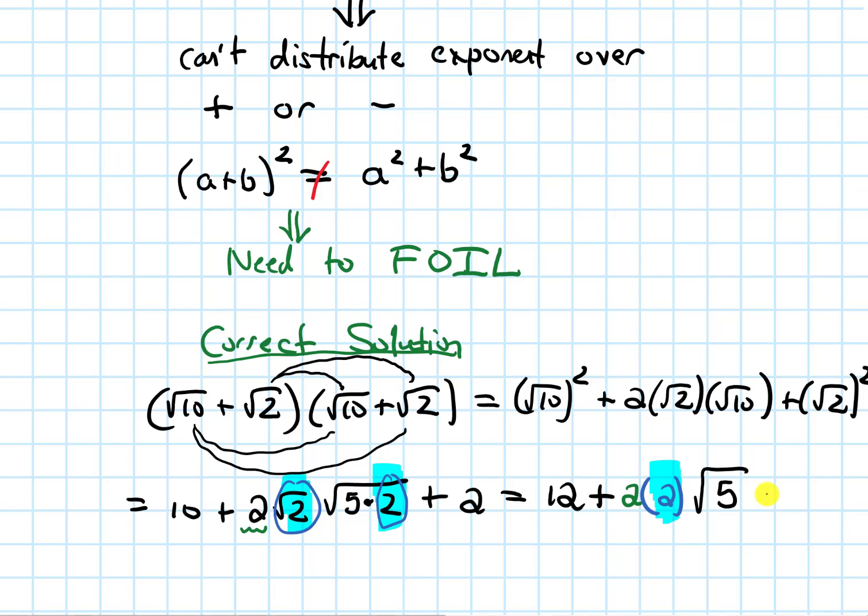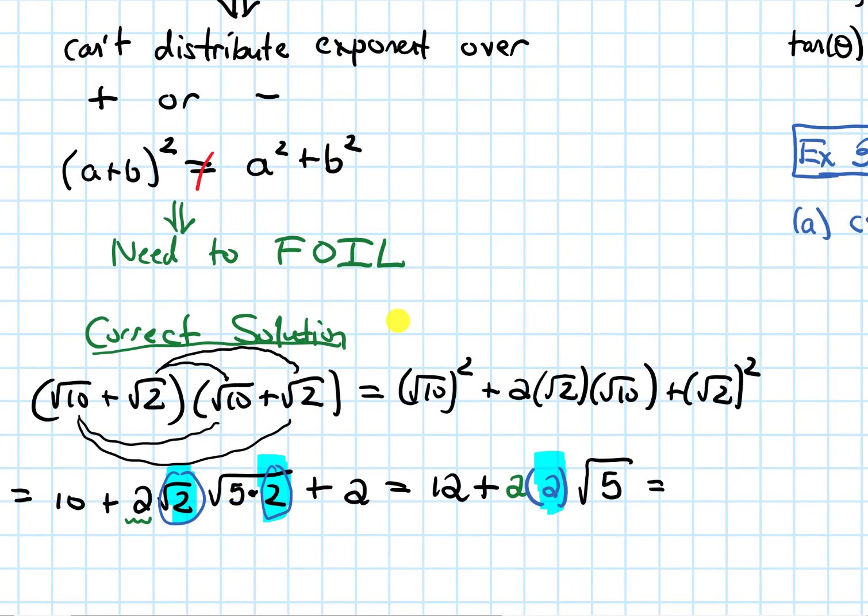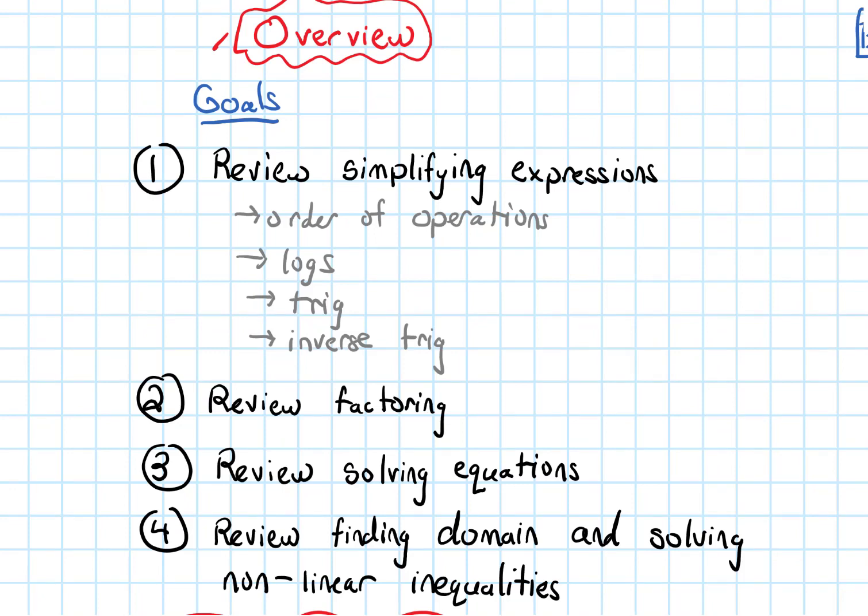So what we end up with is 12 plus 2 times 2, that's 4, 4 root 5. And that is as far as we can simplify this. Coming back to our goals for this section, we have finished part of this first learning goal. We've done a quick review of some order of operations and common mistakes that show up there.